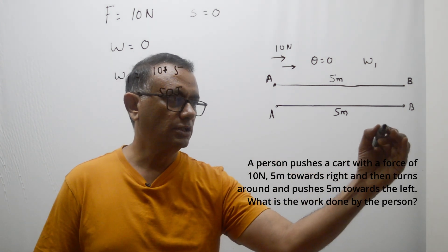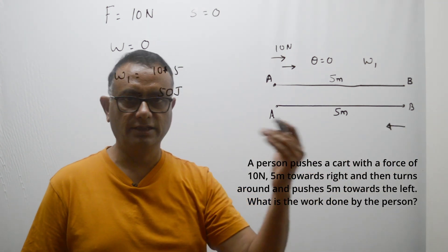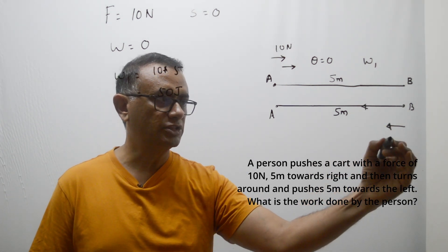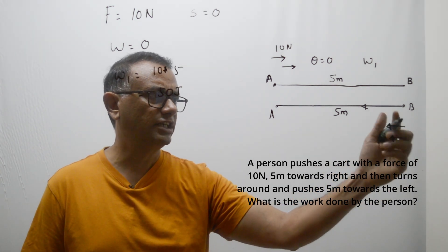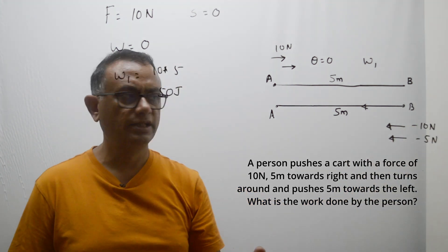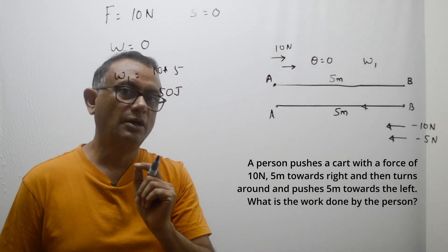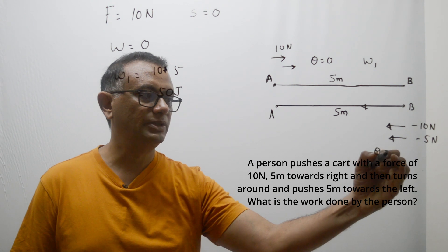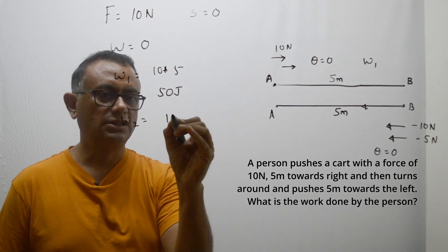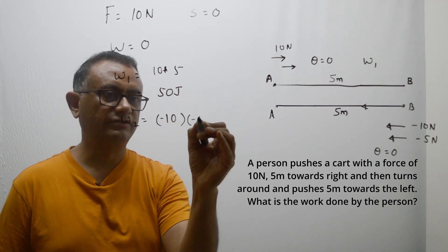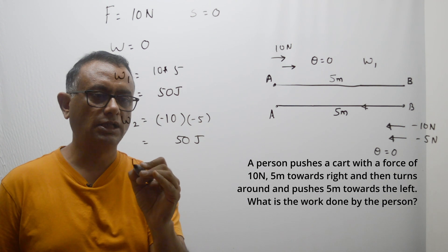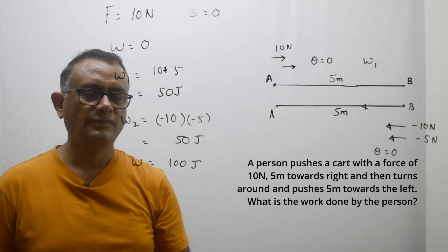In the return journey, the force is acting in the opposite direction, but the displacement from B to A is also in that same direction, so force and displacement are once again parallel — angle zero. We can say force is minus 10 and displacement is minus 5, so work done W2 is minus 10 multiplied by minus 5, which is 50 joules once again. Therefore total work done W equals 100 joules.